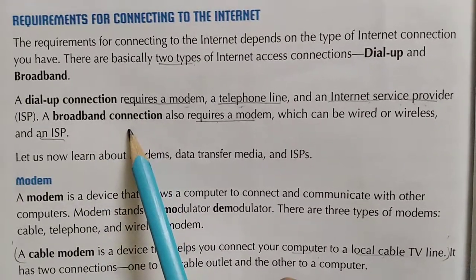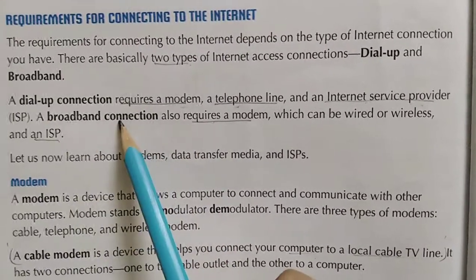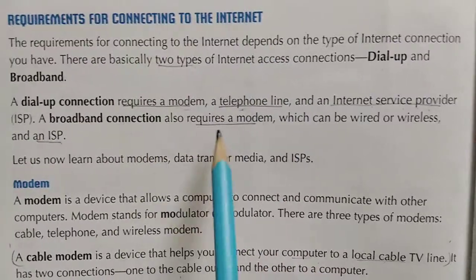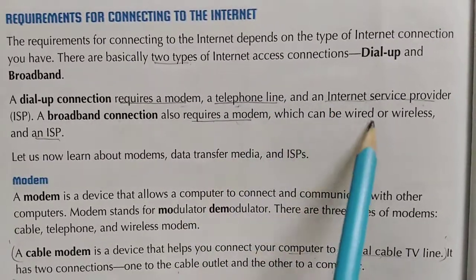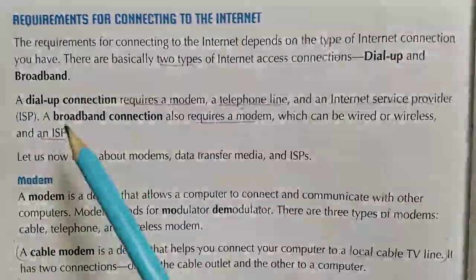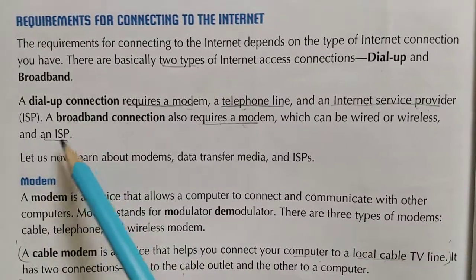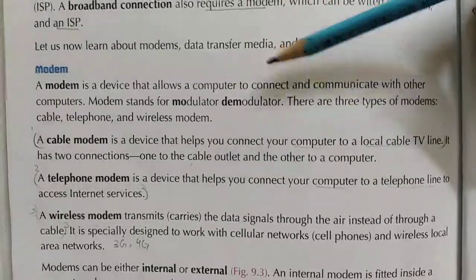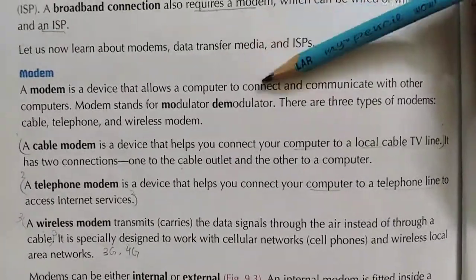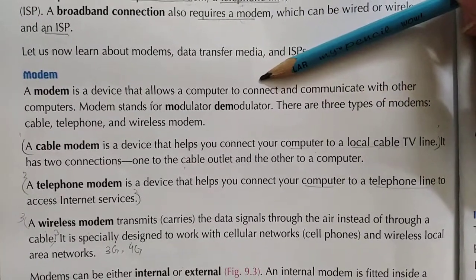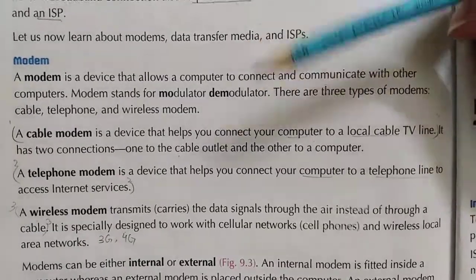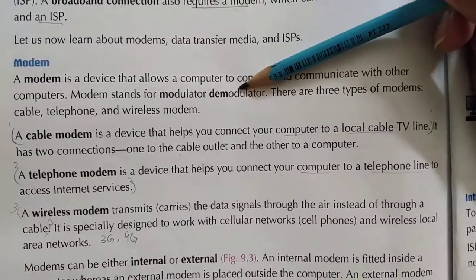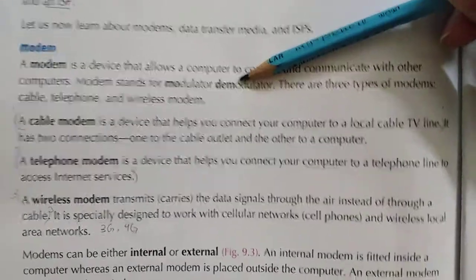Then comes the broadband connection, which is the second type of internet connection. It requires a modem and a wire, or it can be wireless, and an internet service provider. So what is a modem? A modem is a device which connects your computer with other computers and the internet through a telephone wire — it connects you to the internet service provider.